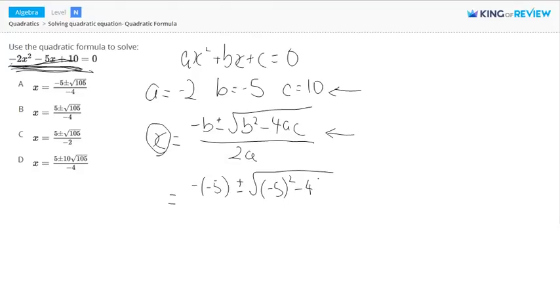minus 4 times a, which is negative 2, times c, which is 10, all over 2a, which is 2 times negative 2.